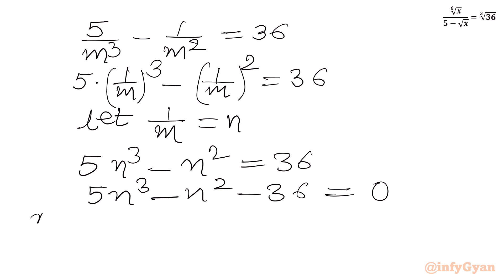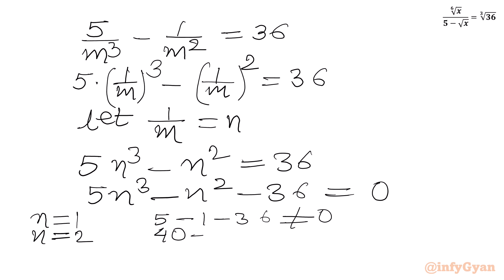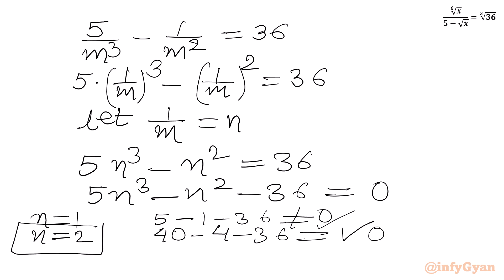Now if I plug in n equal to 1: 5 minus 1 minus 36 is not 0, so n=1 does not work. If I plug in n equal to 2: 5 times 8 is 40, minus 4, minus 36 equals 0. Yes, this gives us 0, so n equal to 2 is one root of this cubic equation.